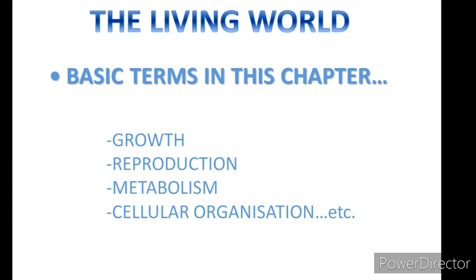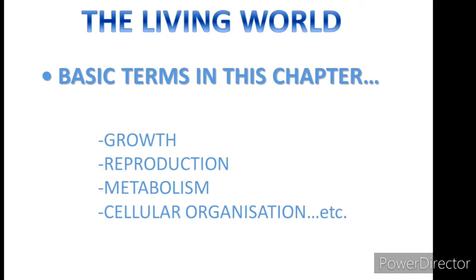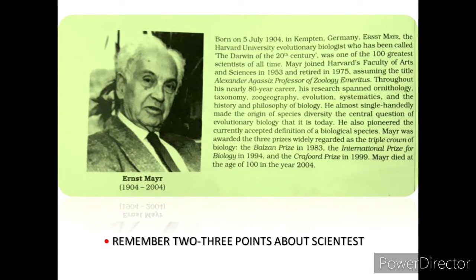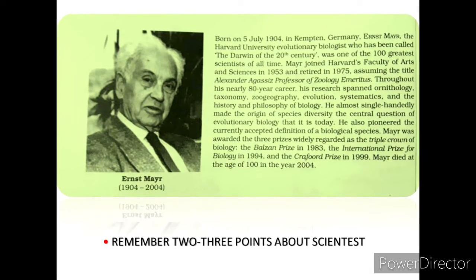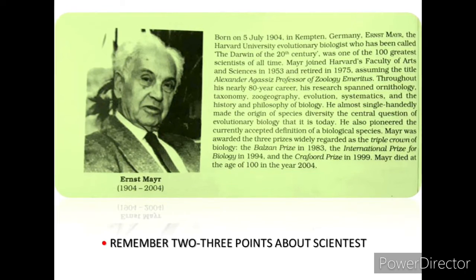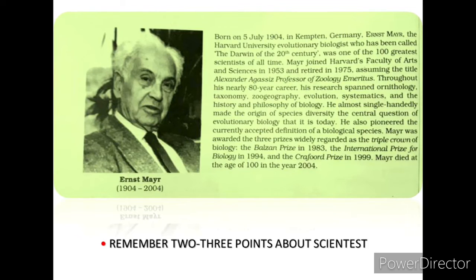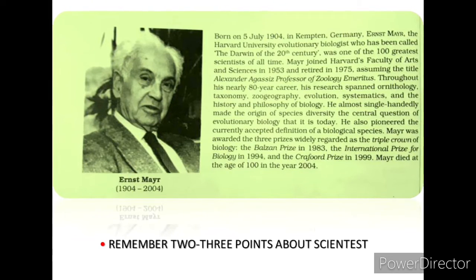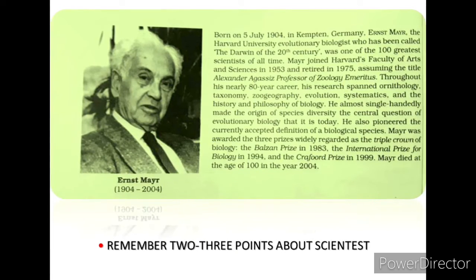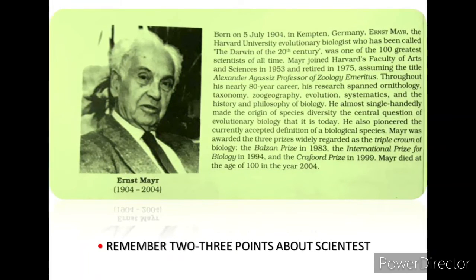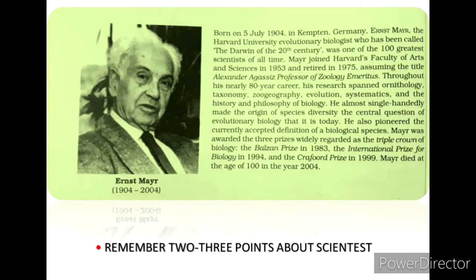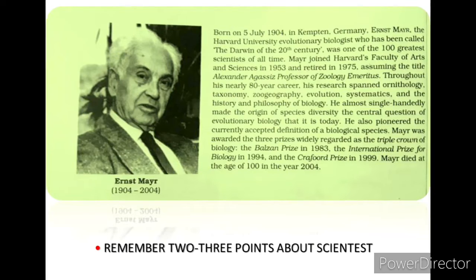In every unit you will find a brief history of the scientist, as also given in this chapter. You have to remember two to three points about the scientist. In the case of morphology there is Katherine, in the case of cell biology there is G. Ramachandran, in plant physiology there is Melvin Calvin, and in human physiology there is Alphonzo.